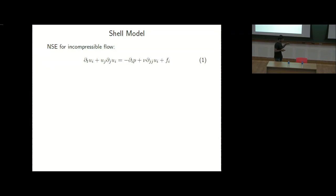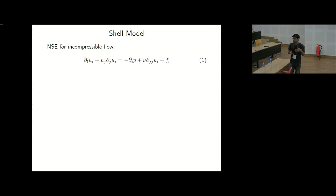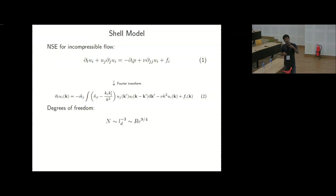So I don't have much time, but I'll explain it very briefly. Shell model is the numerical tool which I am using. Let's write Navier-Stokes equation for incompressible flow and Fourier transform it. To resolve very small length scale, like dissipative length scale, the number of degrees of freedom are Reynolds number to the power 9/4.